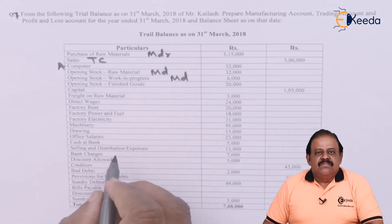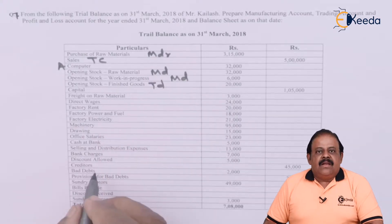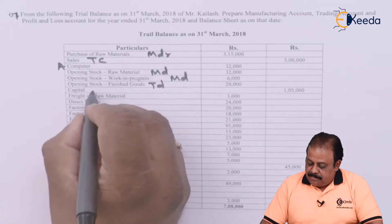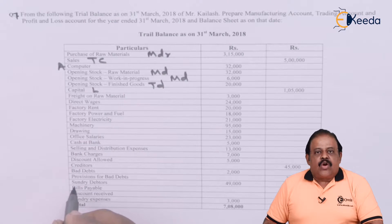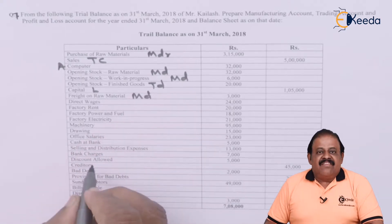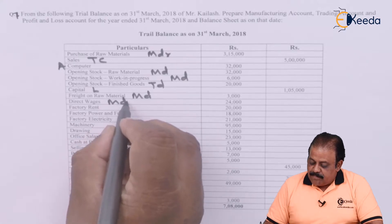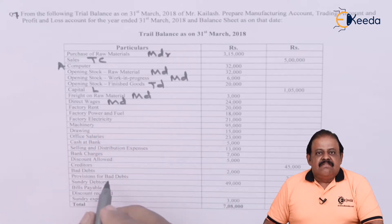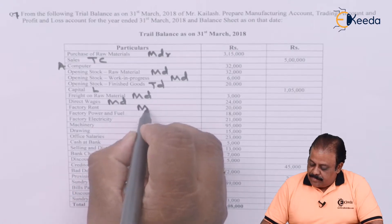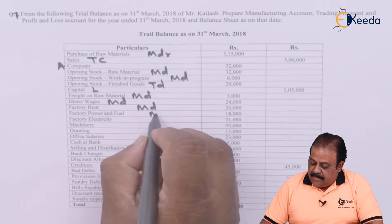Opening stock of finished goods — trading debit. Capital — liability, first item. Freight on raw materials — manufacturing account debit, cost of material consumed. Direct wages, that is direct labor — manufacturing account debit. Factory rent — manufacturing account debit, factory expense. Factory power and fuel — factory expense, manufacturing account debit.